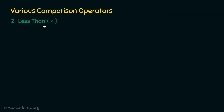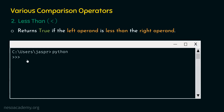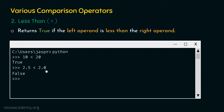Let's move to the next operator: less than. The less than operator returns true if the left operand is less than the right operand. For example, 10 < 20 — 10 is less than 20, so we get true. If we type 2.5 < 2.0, we will get false, because 2.5 is not less than 2.0; it is greater than 2.0.